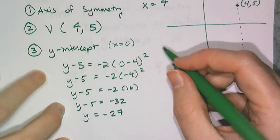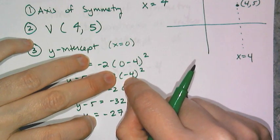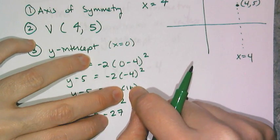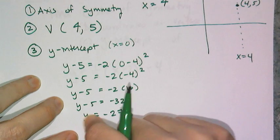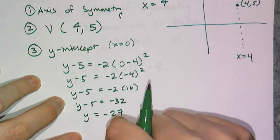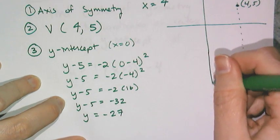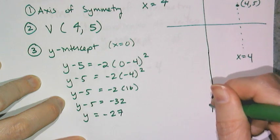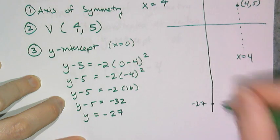So a few reminders when solving this equation. Remember that's negative 4 in parentheses squared, which yields a positive 16. And then when I simplify it all the way down, I get y equals negative 27. So way down here at negative 27, I have a second point.